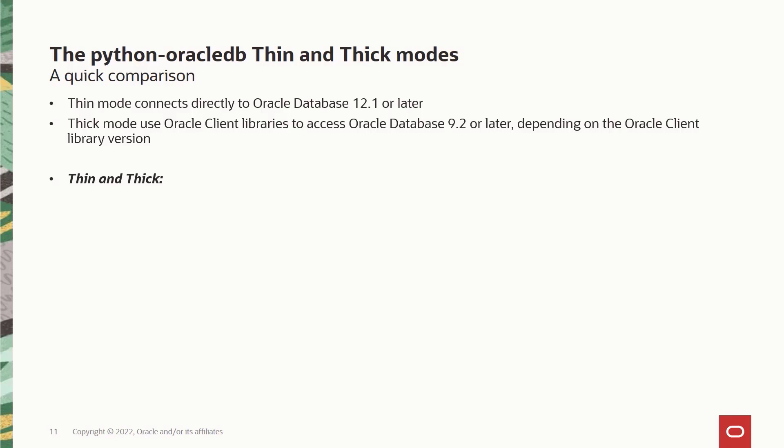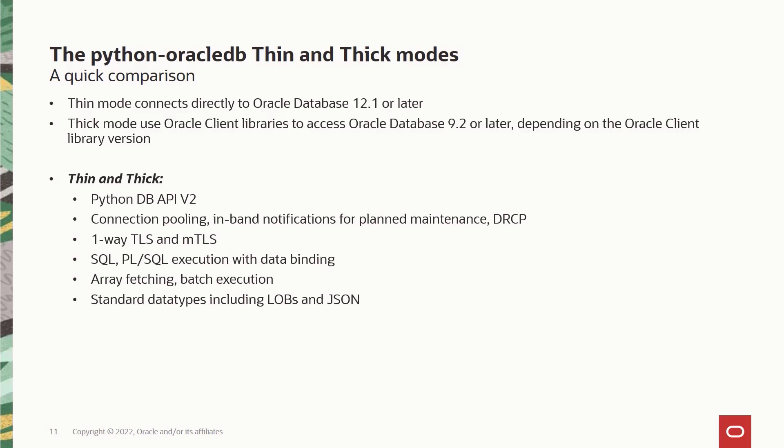Looking at what's supported in both the thin and the thick modes: Python Database API version 2 specifications are supported in both modes. Connection pooling, in-band notifications and DRCP support is available. One-way TLS and mutual TLS authentication, which is especially required for connecting to Oracle Cloud Autonomous Databases, are supported in both modes. SQL execution, PLSQL execution with data binding, array fetching and batch execution support is available in both modes. Standard data types including LOBs and JSON are supported across both the thin and the thick modes.